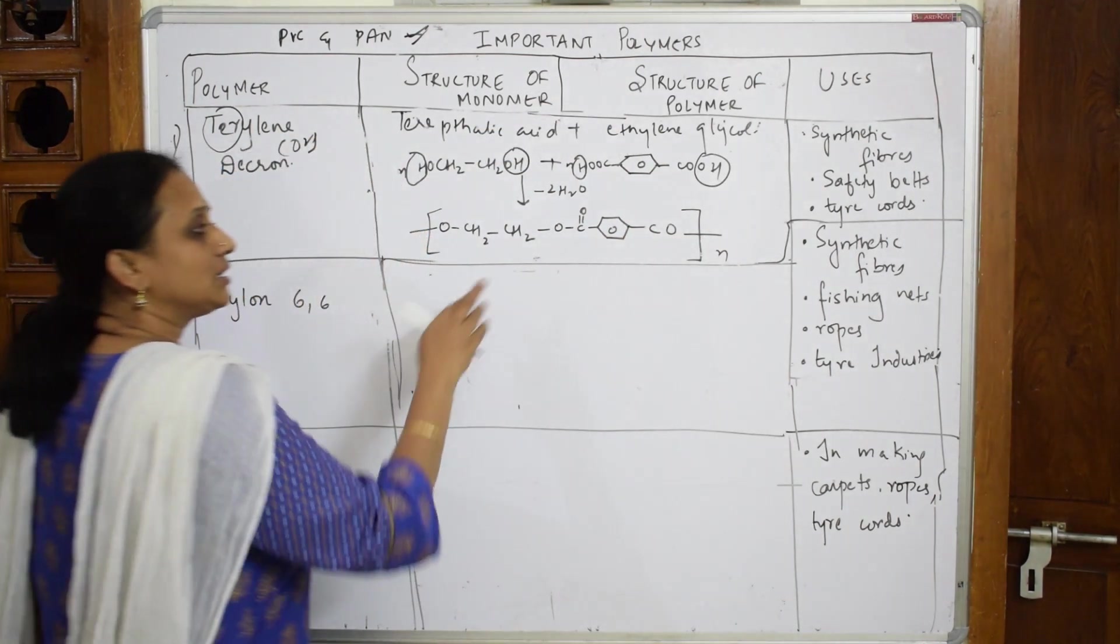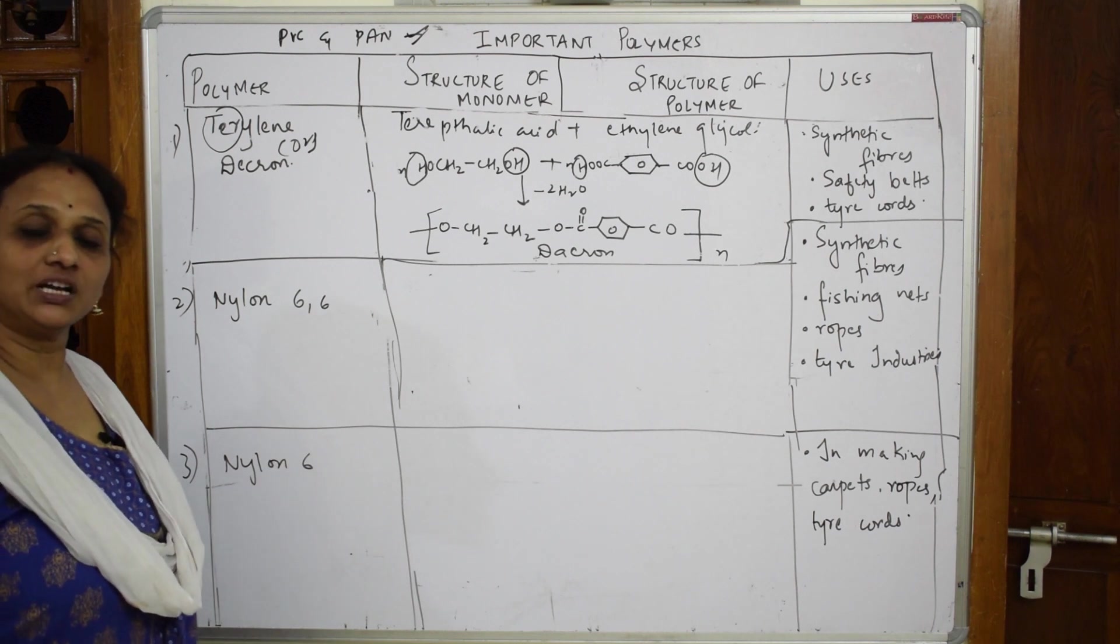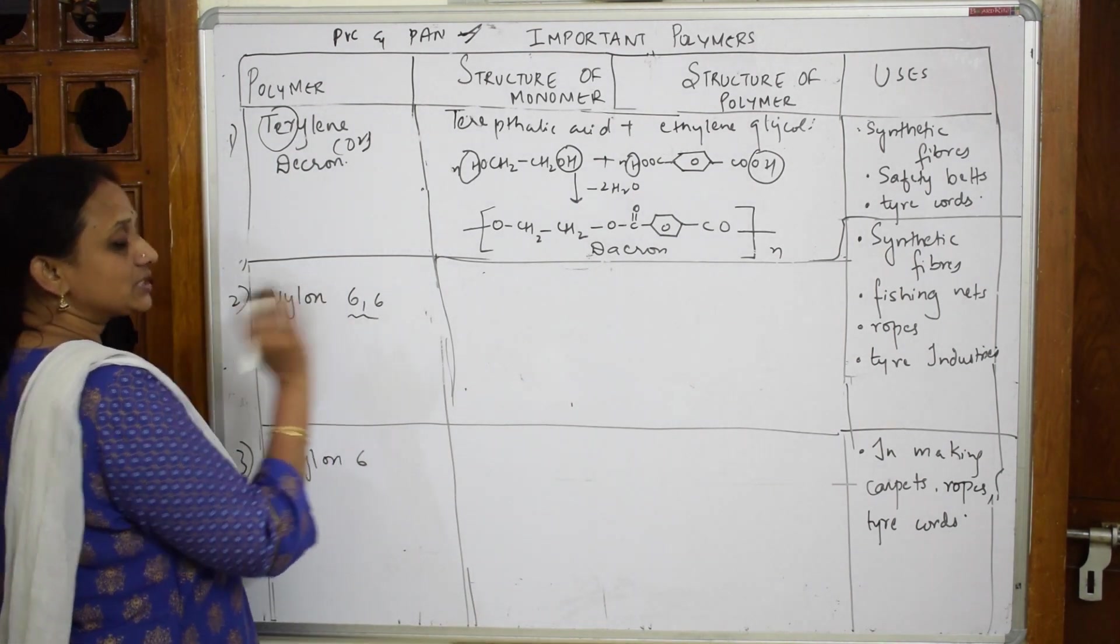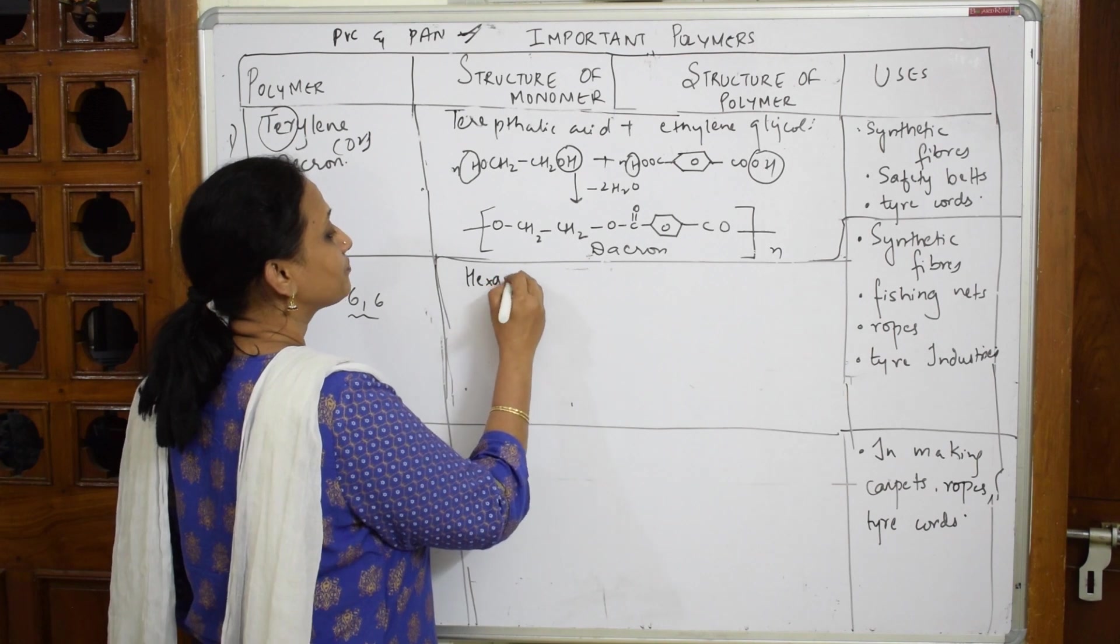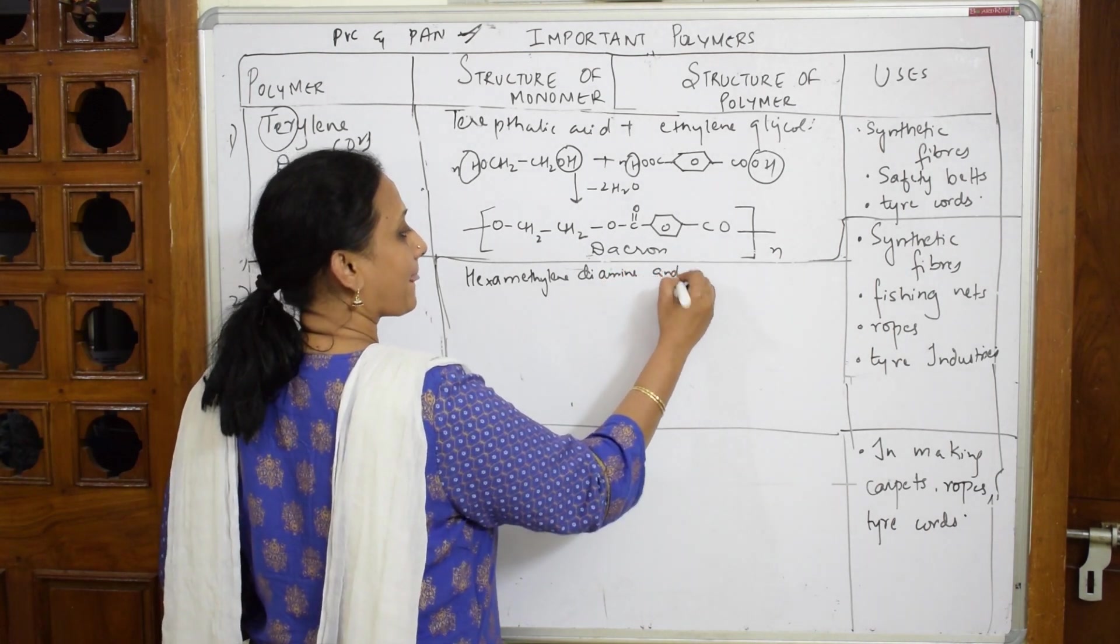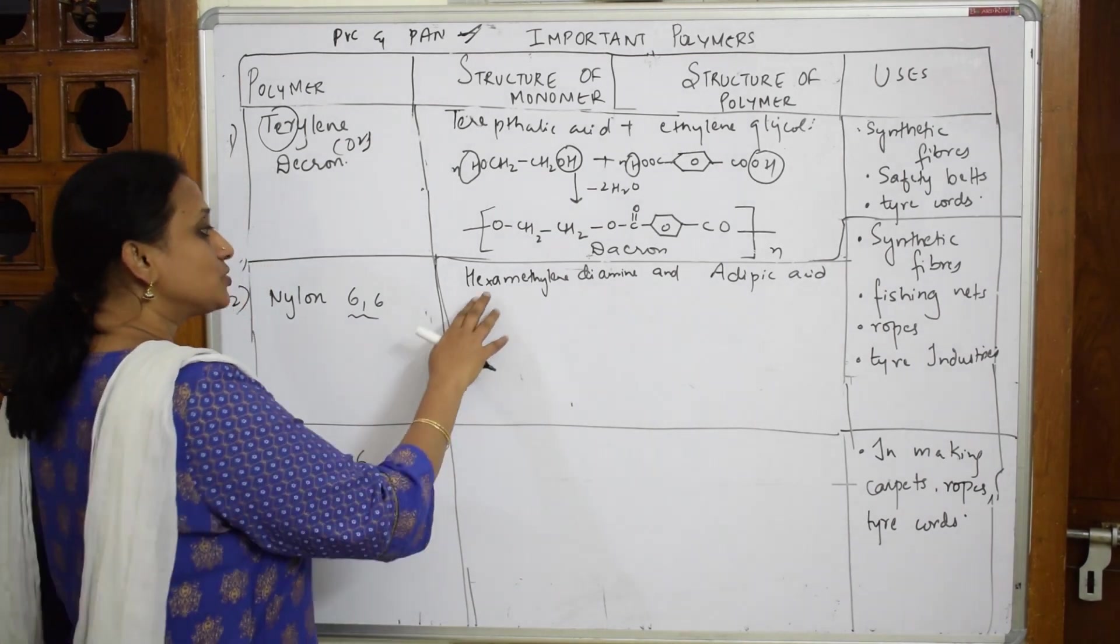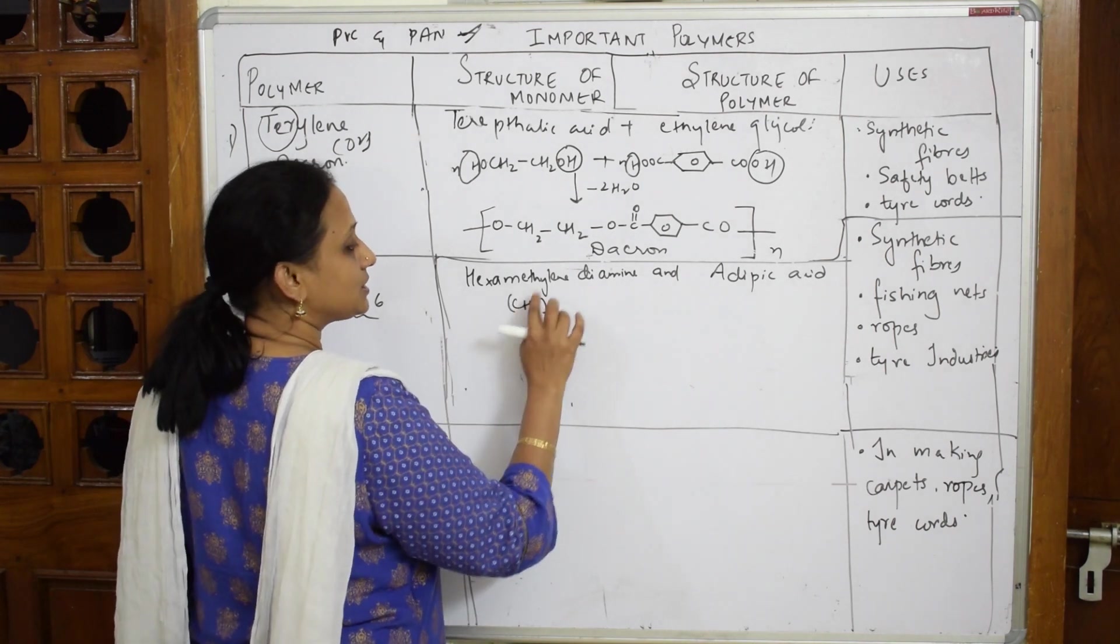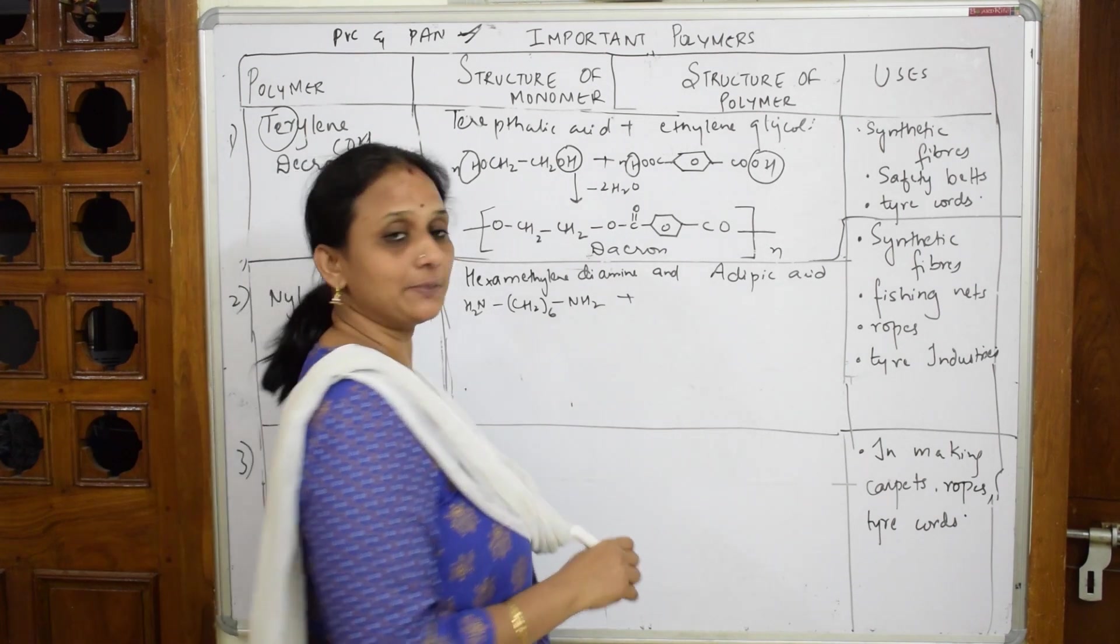This compound is called Terlin or Dacron. Next, let's come back and do Nylon 6,6. So Nylon 6,6 is basically made up of two monomeric units. I'll show you why we have this 6,6. The first monomer of Nylon 6,6 is hexamethylene diamine and adipic acid. Hexamethylene diamine means there are six methylene groups. What is a methylene group? CH2 taken six times. Diamine means on both sides you have NH2.